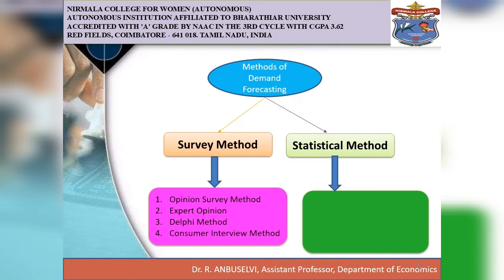The third one is the Delphi method. A variant of opinion polling or survey method, it was developed by the RAND Corporation of the USA in 1940 for predicting technical changes in the forecasting of demand for a product. The fourth method is the consumer interview method, where consumers are contacted personally to know about their plans and preferences regarding the consumption of products. This is conducted by salespersons to know the preferences of regular, existing, or target group customers.